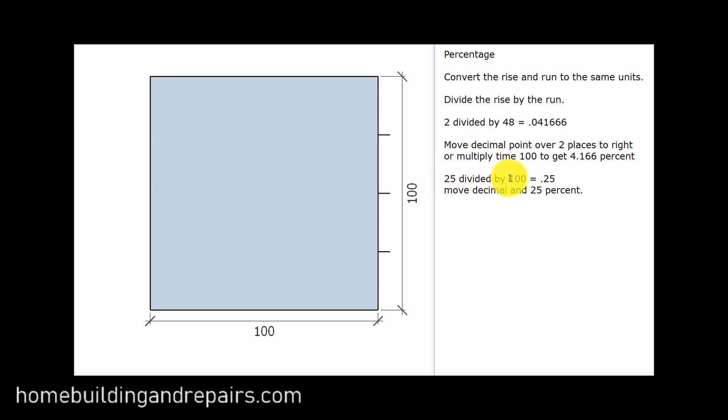So if I had a line going from here to here, and this represented my slope, and I wanted to know what percent that slope would be, then I would just simply do the same thing here. Divide 25 divided by 100, 0.25, move the decimal point over, and I got 25 percent.